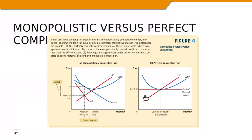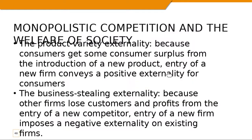How does monopolistic competition affect the welfare of society? We have the product variety externality — consumers get consumer surplus from the introduction of a new product, so entry of a new firm conveys a positive externality for consumers. For example, Jersey Mike's wasn't in Georgia or Arkansas for a while, so its entry gave consumers more sandwich options and more diversity. Similarly, there is the business stealing externality — because other firms lose customers and profits from the entry of a new competitor, entry of a new firm imposes a negative externality on existing firms.